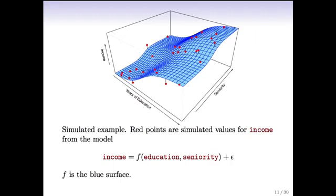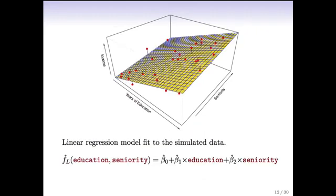Here's a two-dimensional example: seniority, years of education, and income. This is simulated data and the blue surface is actually showing you the true function from which the data was simulated with errors. Each of those data points comes from a particular pair of years of education and seniority with some error. The little line segments in the data point show you the error. We can write that as income is a function of education and seniority plus some error. This is the truth - we actually know this in this case. Here's a linear regression model fit to those simulation data. It's an approximation. It captures the important elements of the relationship but doesn't capture everything. It's got three parameters.